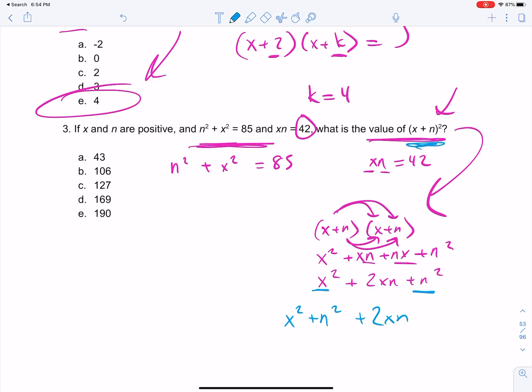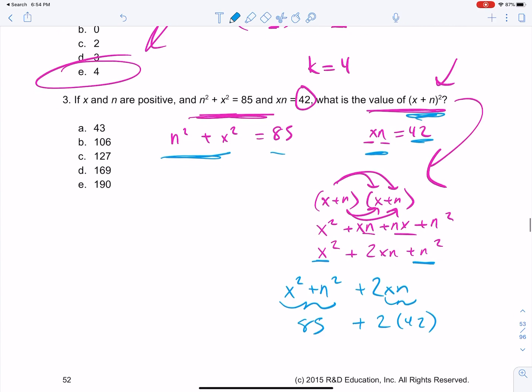Well, x squared plus n squared is what? n squared plus x squared is 85. xn is what? 42. So we can do 2 times xn, which is 42. So what do we get? 85 plus 84 gives us 169. Answer choice D. Boom!